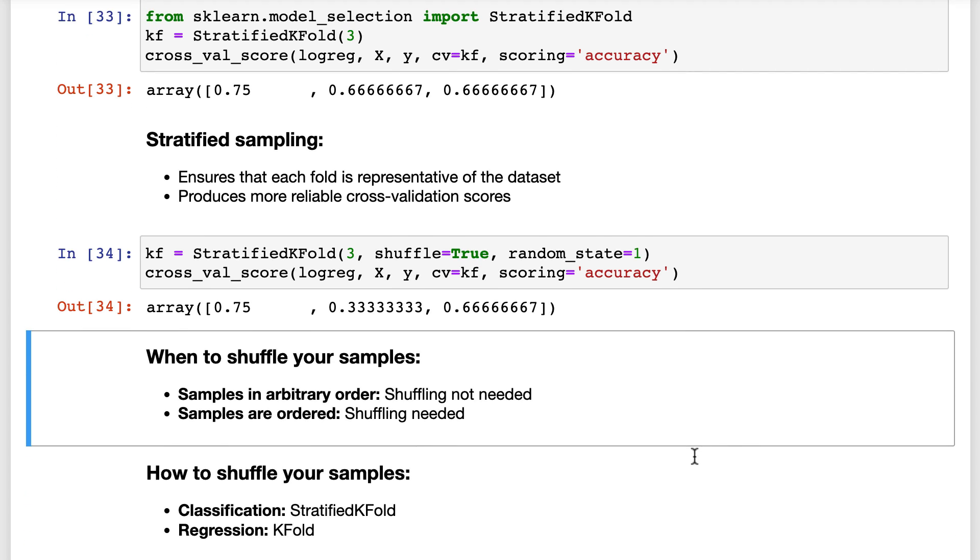In summary, if you have a classification problem and the samples are in an arbitrary order, you can just pass an integer to the cv parameter of cross-validation score, and it will use stratified sampling without shuffling.